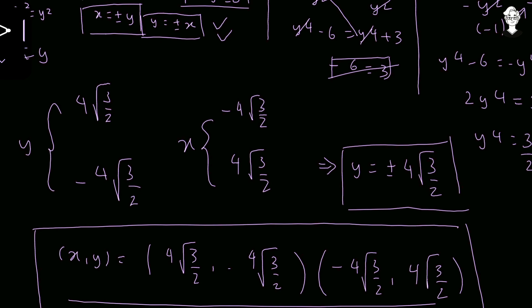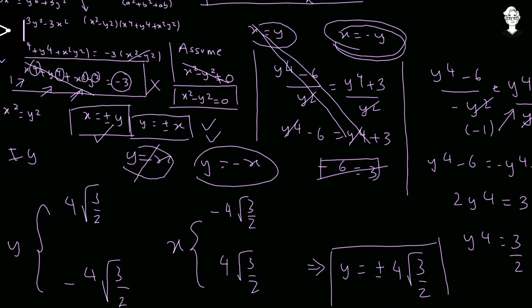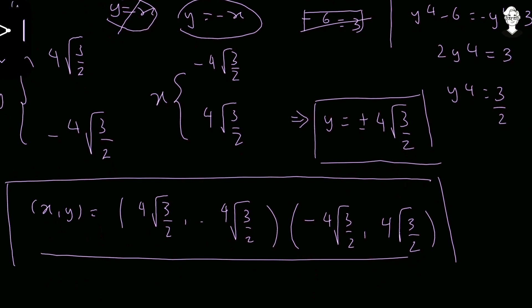You might wonder about the case y equals plus or minus x. For y equals x, that is the same contradiction as x equals y. And x equals negative y is the same as y equals negative x, which gives the same solution pairs. So the complete set of real solutions remains: (⁴√(3/2), −⁴√(3/2)) and (−⁴√(3/2), ⁴√(3/2)).